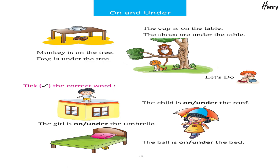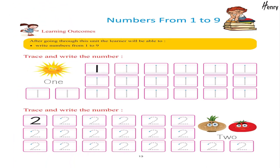Numbers from 1 to 9 — Learning Outcomes: After going through this unit, the learner will be able to write numbers from 1 to 9. Trace and write the numbers.